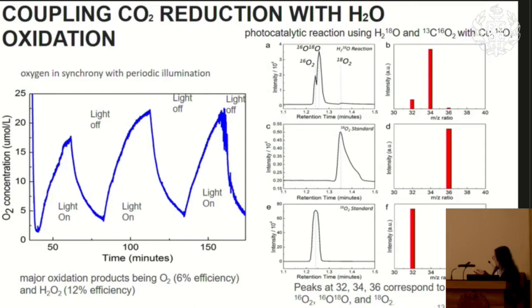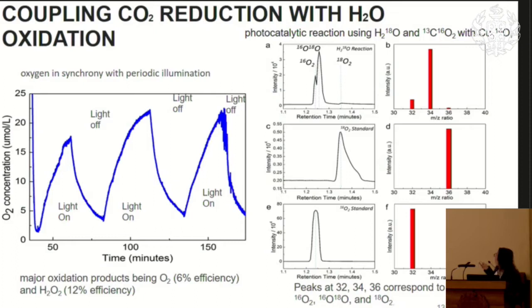We wanted to show that oxygen comes from water, since many reviewers suggested it might come from decomposition of cuprous oxide. So we did isotopic labeling with oxygen-18 water. We found that the majority of oxygen product is a mixture of O-16 and O-18, as expected, because the CO2 also contained O-16 oxygen. The main product, due to the mechanism, is mixed 16-18 oxygen, which was confirmed.